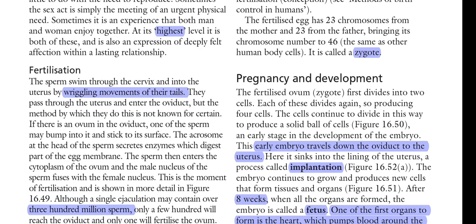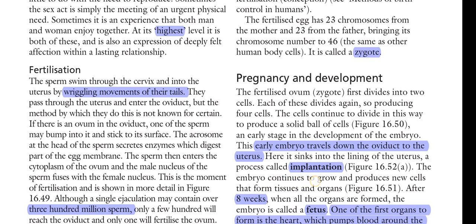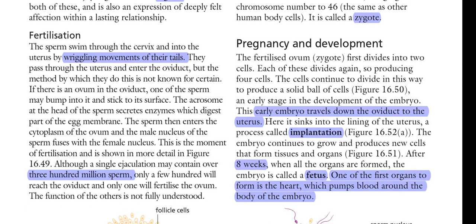The embryo continues to grow and produces new cells to form tissues and organs. After eight weeks — two months — when all the organs are formed, the embryo is called a fetus. At this point all the necessary body organs have been formed.